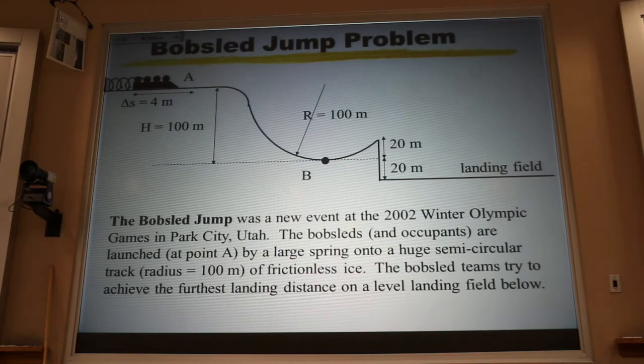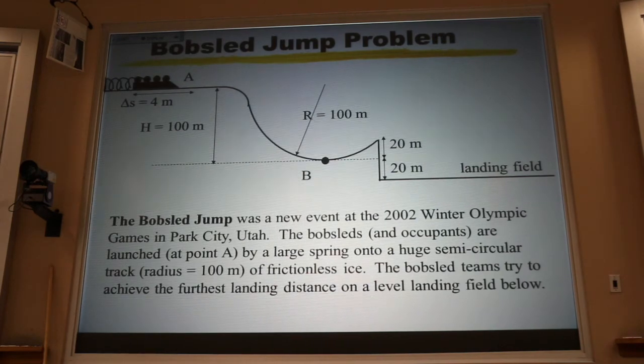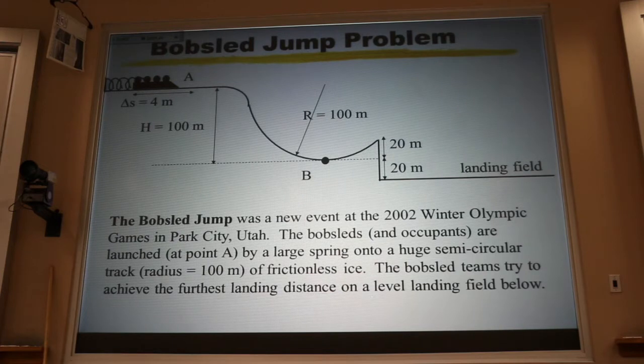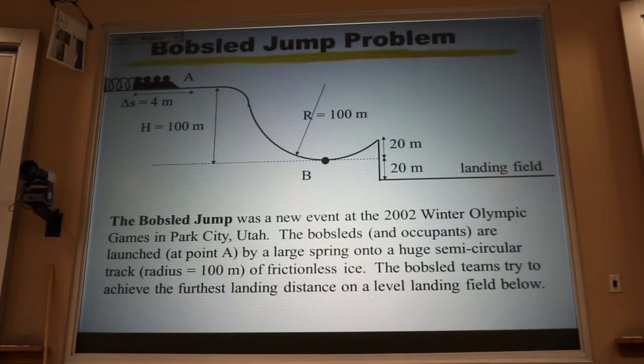This problem was written back in 2002 when the Winter Olympics were nearby. My wife and youngest son went down. My oldest son was actually working as one of those helpful people from BYU helping to run the event. The only event they could get into was the bobsled. They came back and my son was so excited I wrote this exam question. In this case, we have bobsleds being launched by a spring. They go down a frictionless ramp and they try to get as much air as possible, see how far they can go down the landing field.